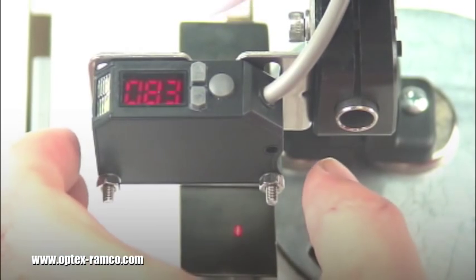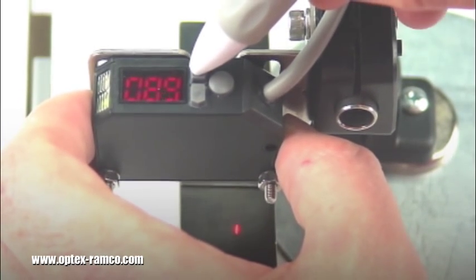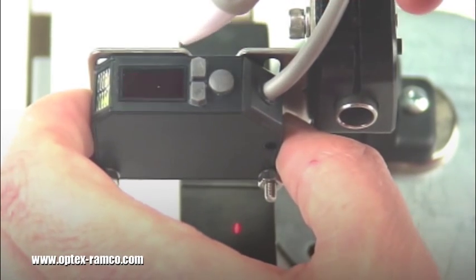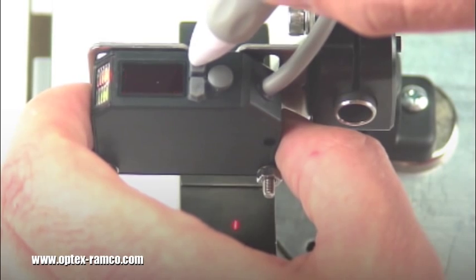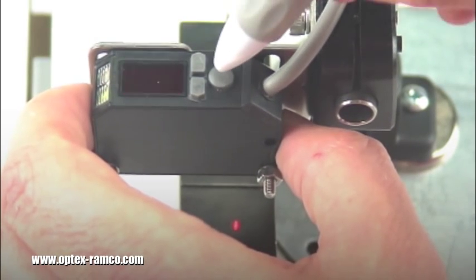In order to set the sensor up, I press and hold the up arrow key for a few seconds until SEL is on the display. I then select background suppression mode, or BGS.